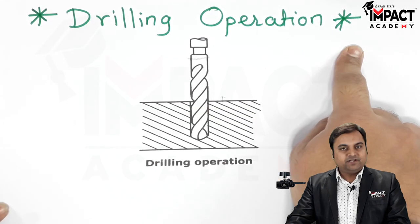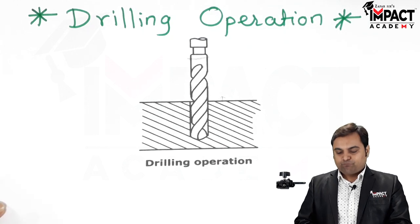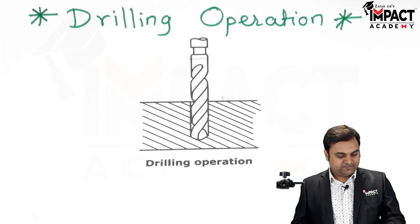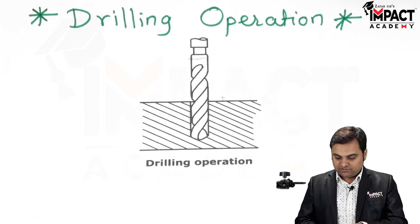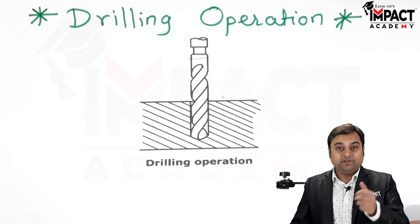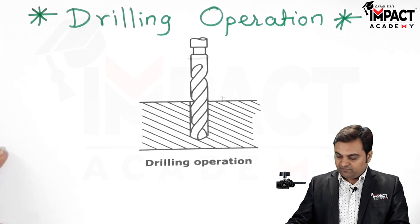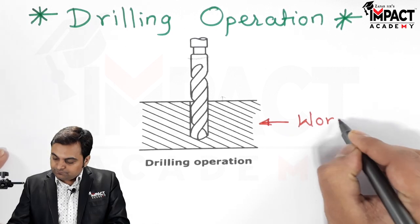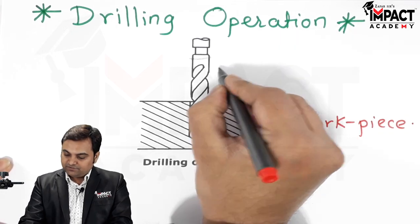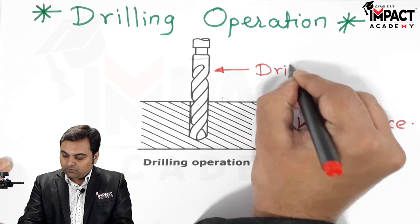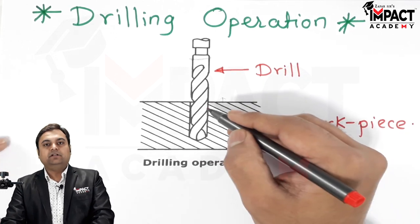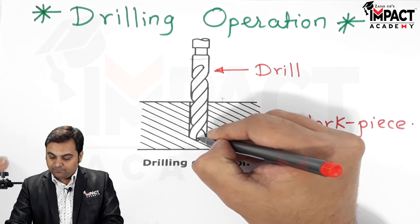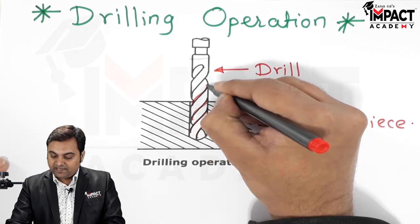The drilling operation is basically used to produce a hole in a workpiece. It is one of the primary machining operations which need to be performed on a given workpiece. Here we have a workpiece and this is the drill, also called as the cutting tool. The drill can also be defined as a multi-point cutting tool because it has multiple edges which perform the cutting action.